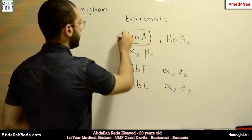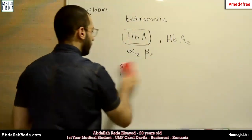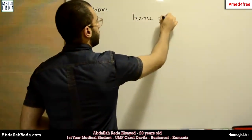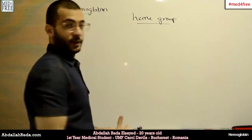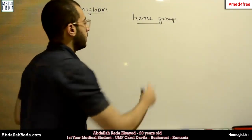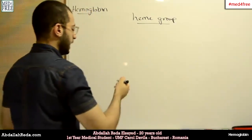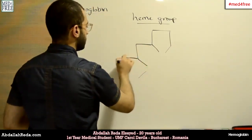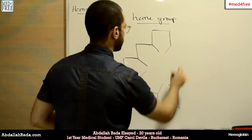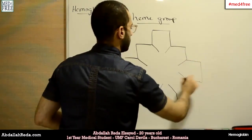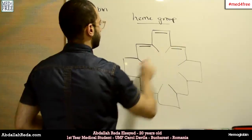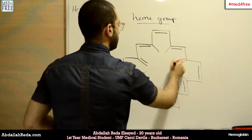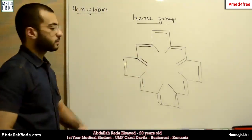Now we are going to talk about adult hemoglobin. The part of hemoglobin which binds oxygen is called the heme group. This group contains a ferrous ion (Fe2+) bound to nitrogen atoms in a specific arrangement, and this is the shape of the heme group.